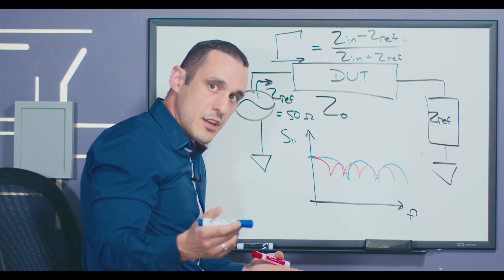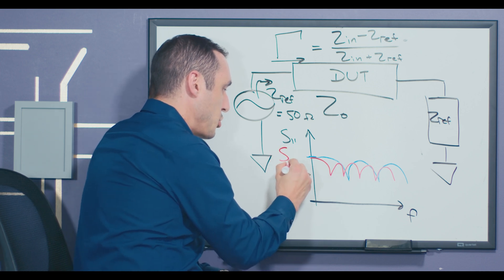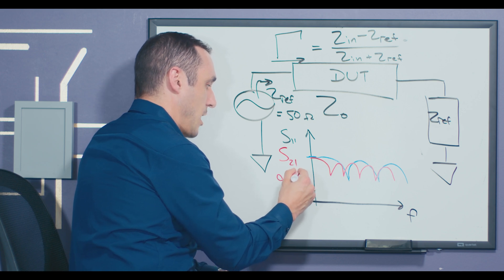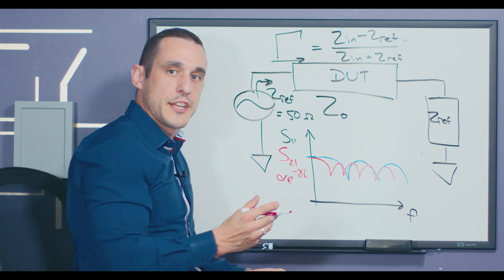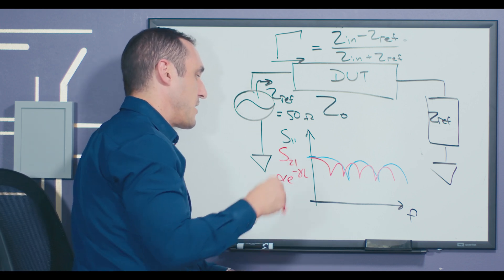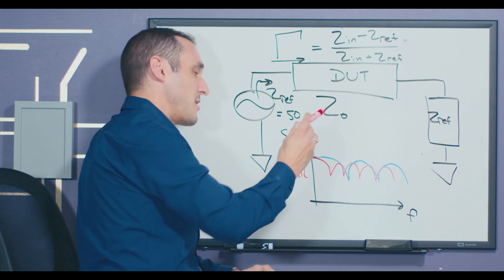Well, how do you get the propagation constant? Well, you can actually do that by taking a measurement of S21. So S21 is proportional to the exponential of negative propagation constant times the length of the interconnect. So S21 can also be used to then get the propagation constant, plug that back in here, and then you can extract the impedance.